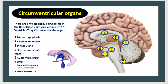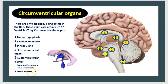Circumventricular organs are physiologically leaking points in the blood-brain barrier located around the third and fourth ventricles. There are seven: the first is the neurohypophysis; the second is the median eminence; the third is the pineal gland; the fourth is the subcommissural organ; the fifth is the subfornical organ; the sixth is the OVLT; and the seventh is the area postrema.